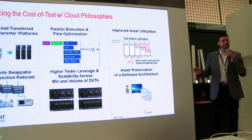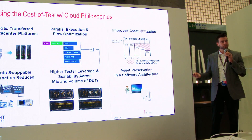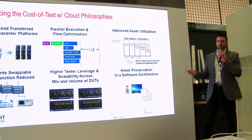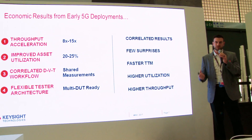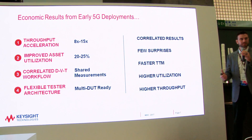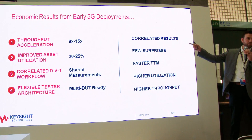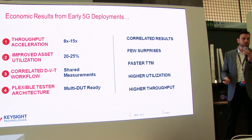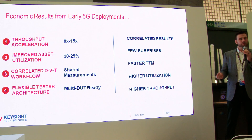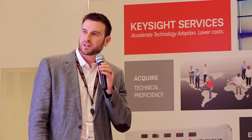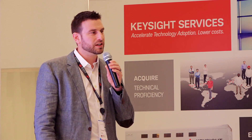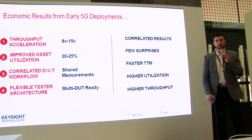What are the early results? We've started working with a couple of partners to implement these cloud and data center topologies, and the results are very promising. By using cloud philosophies and data center topologies, we've accelerated throughput up to 15x with much better device and asset utilization. Because measurements are shared across R&D, DVT, and manufacturing, groups are now able to collaborate and co-develop — resulting in better correlated results, fewer surprises, faster time to market, higher utilization, and higher throughput.